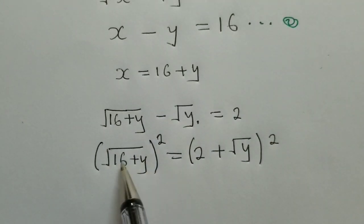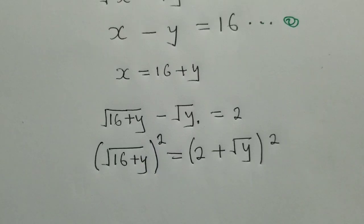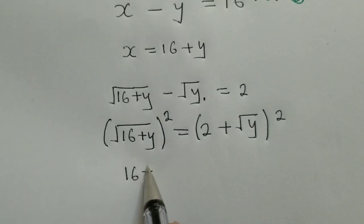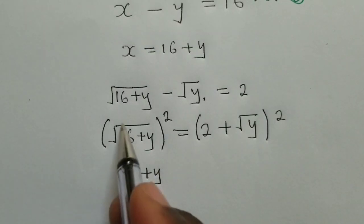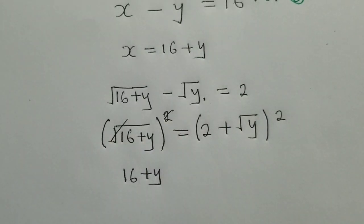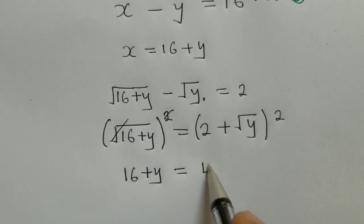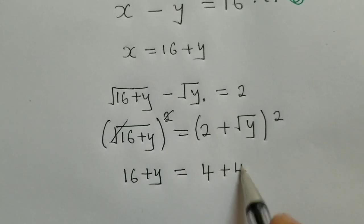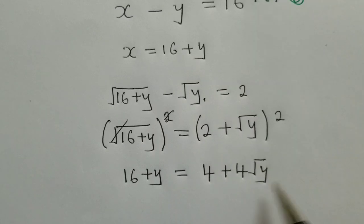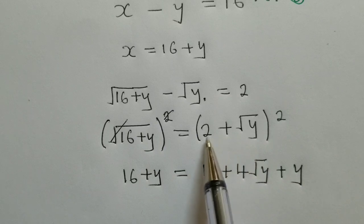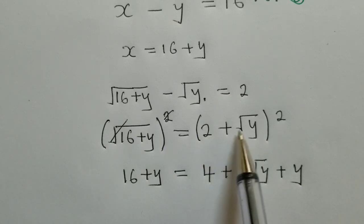What we do to the left side must be done to the right side. Here we shall have 16 plus y. This root and the power will cancel. The other side, we shall have 4 plus 4 root of y plus y. I've just multiplied 2 plus root of y times 2 plus root of y, and this is what I've got here.